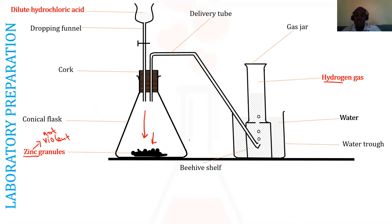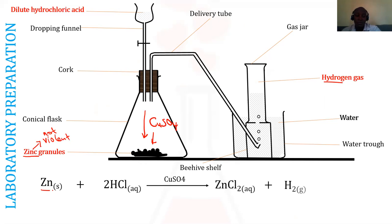If we would like to speed up the reaction, we can use copper sulfate as a catalyst. The chemical equation: zinc granules with dilute hydrochloric acid form zinc chloride (aqueous) and hydrogen gas. The zinc chloride is soluble in water, dissolving in the few water molecules present in our acid.